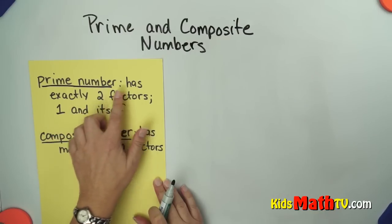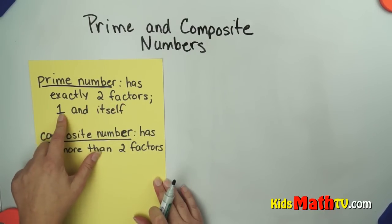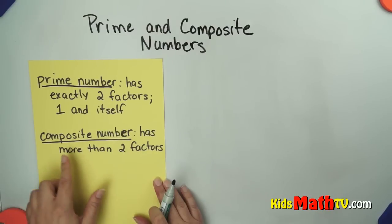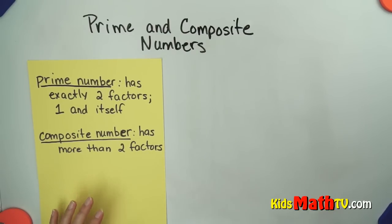A prime number is a number that has exactly two factors, and those two factors are always one and itself. A composite number has more than two factors, so it has more than two numbers multiplied together to make that number.